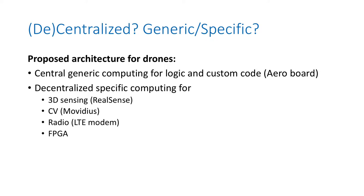Based on all this history, we are making a proposal for autonomous drones at Intel. Our proposal is to have a central generic computing for logic and custom code — that would be the compute board with an Atom processor, a tablet-class processor. Around this compute board, we will have decentralized specific computing for 3D sensing, for example Intel RealSense, computer vision with a Movidius chip, potentially a radio with an LTE modem, and you can even add an FPGA. We are definitely not trying to put all the computation on a single CPU or GPU. We try to keep the architecture a bit like mobile platforms.